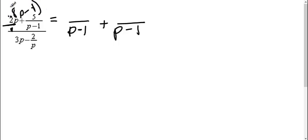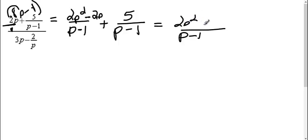Which means I need to distribute. 2p times p is 2p squared. 2p times negative 1 is a negative 2p. This second one already had the p minus 1, therefore I don't have to do anything to it, and I have 5. Now I can combine my terms together. I get p minus 1 on the bottom and 2p squared minus 2p plus 5.